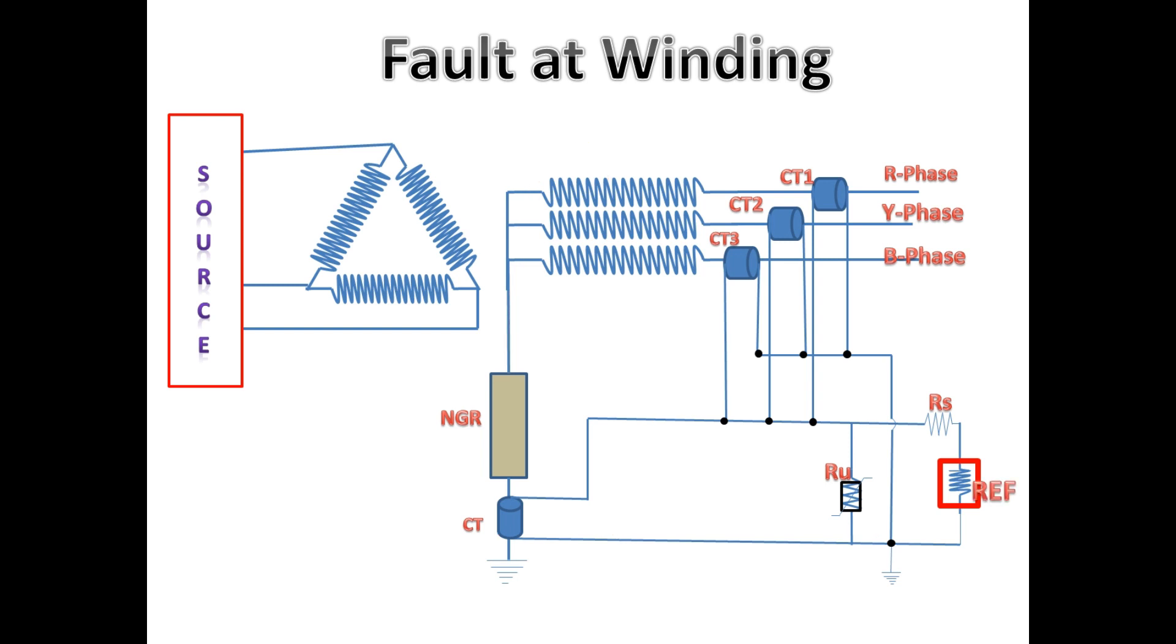Again, we will take one fault condition on the transformer. This time we are going to take a point very near to the neutral side of the winding. There, it will have only lesser voltage.